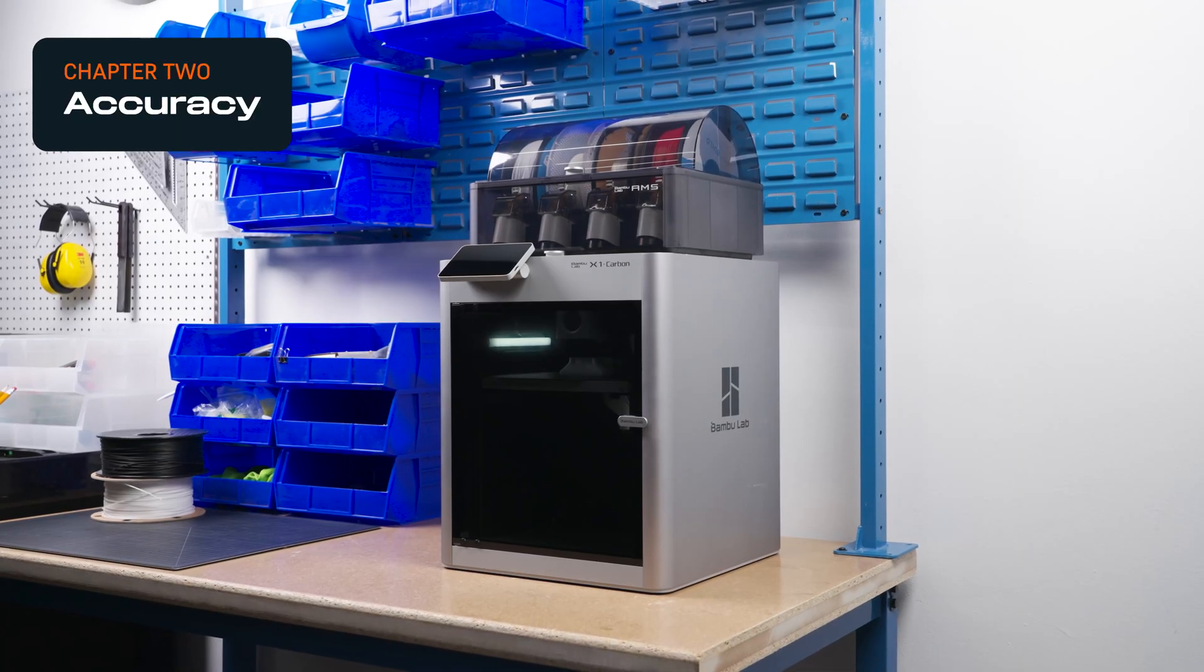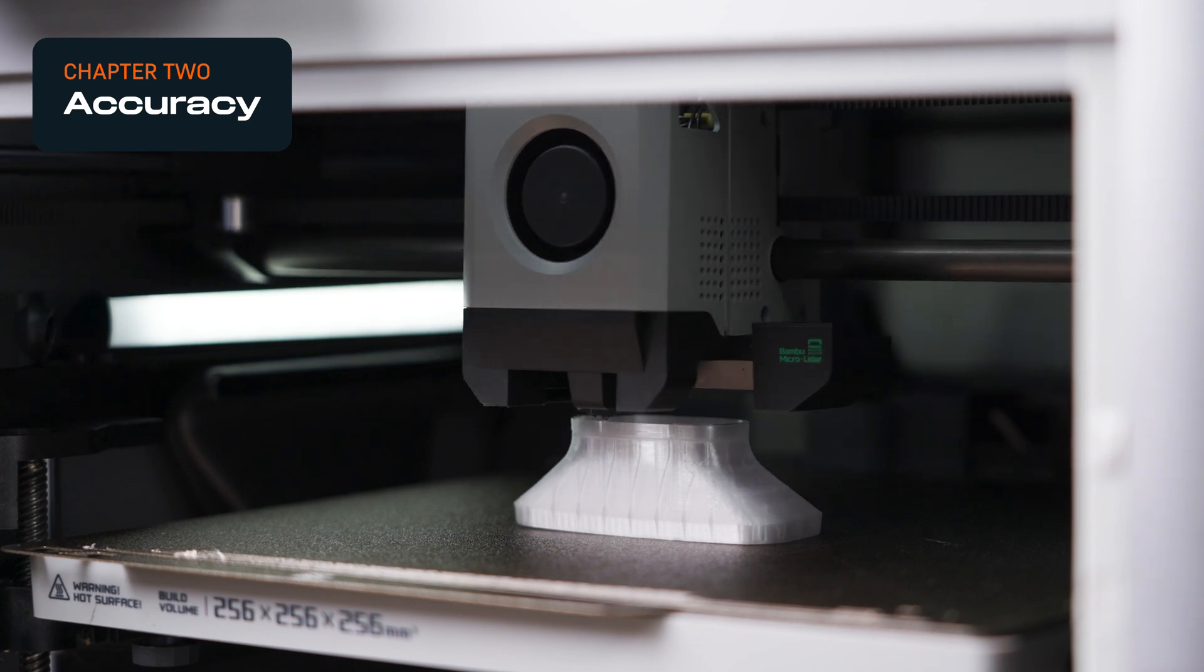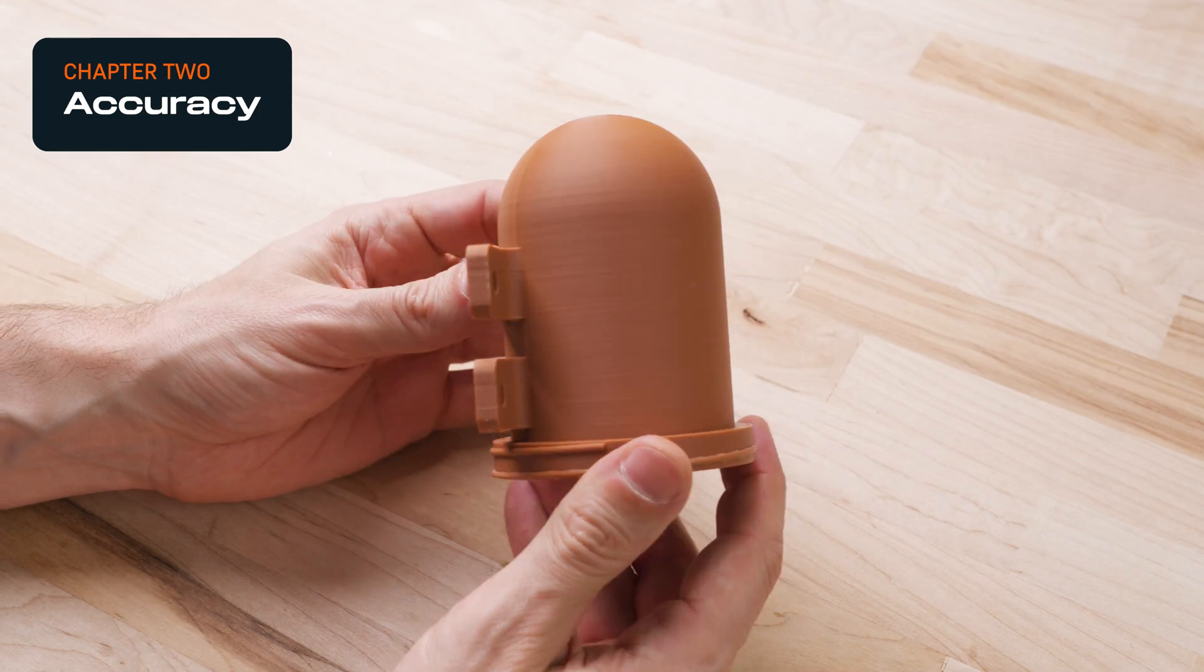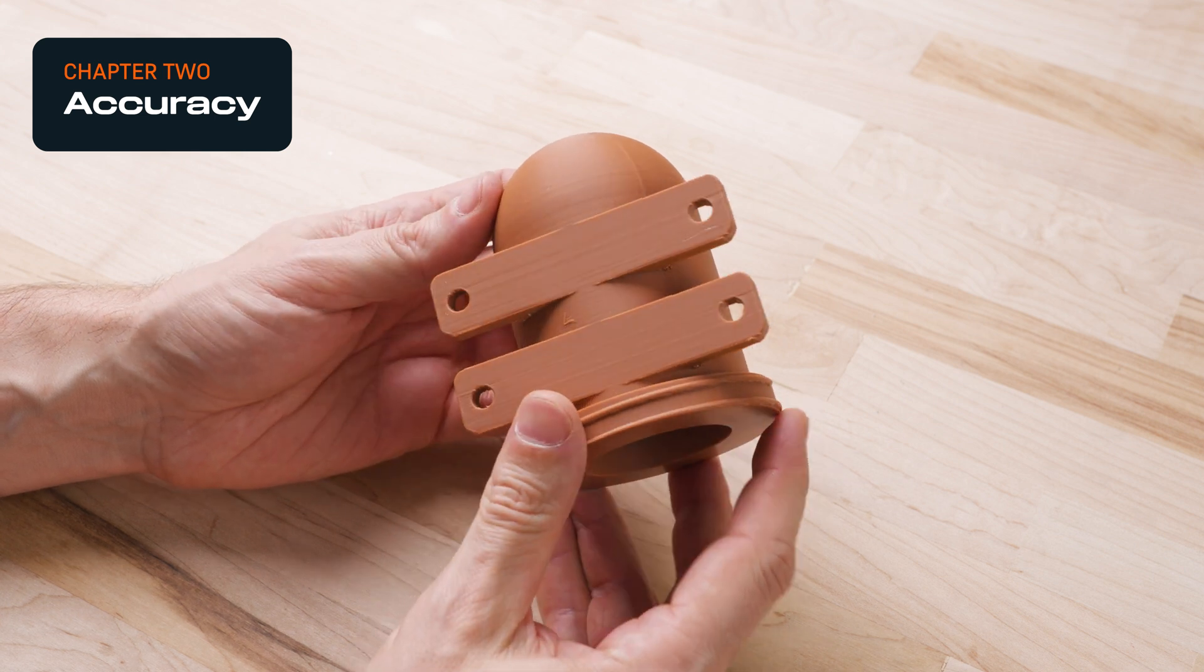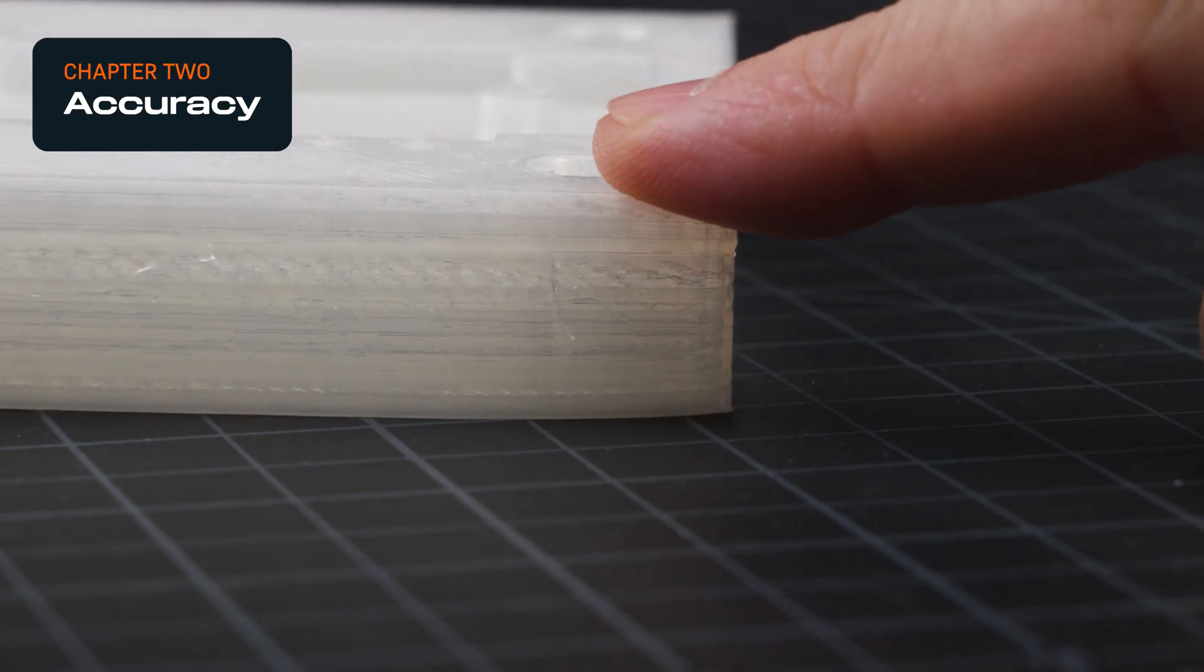For FDM 3D printers, accuracy can be affected by the repeatability of the extrusion process, printing calibration, and filament quality, as well as material choice. PLA is fairly accurate, while materials like ABS or nylon are more prone to warp.